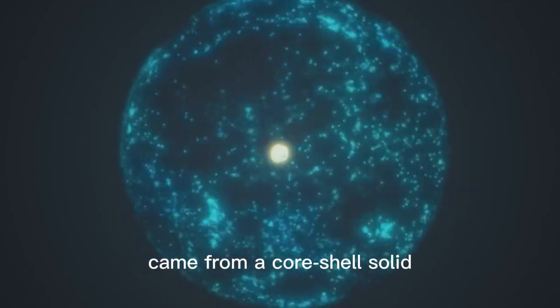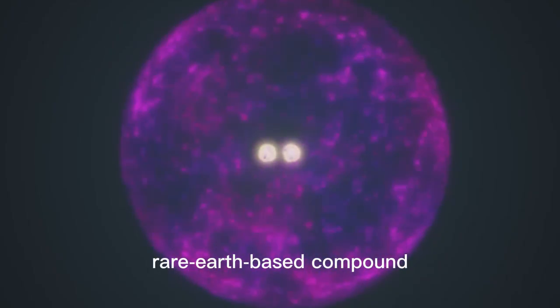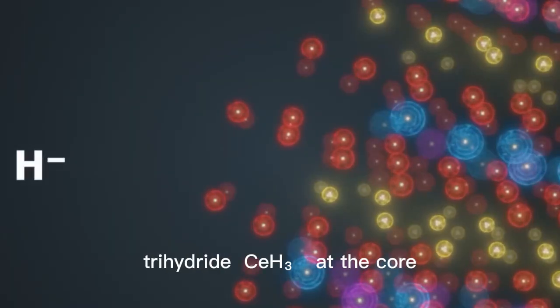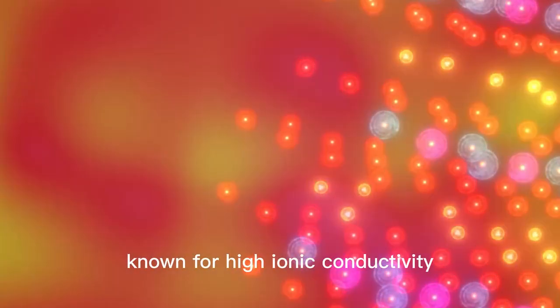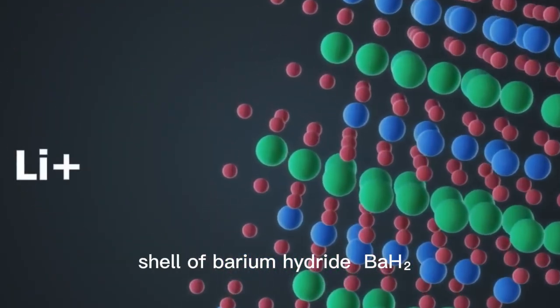The key innovation came from a core-shell solid electrolyte made of a rare-earth-based compound. Inside the material, the team used cerium trihydride, CeH3, at the core, known for high ionic conductivity, and coated it with a thin shell of barium hydride, BaH2.